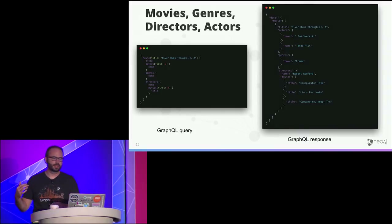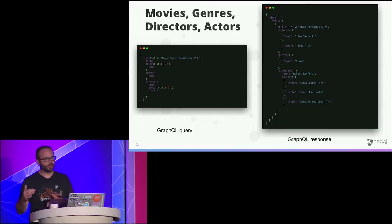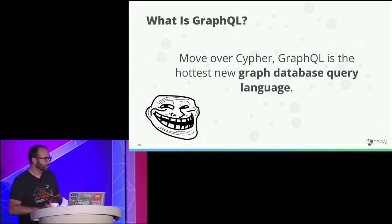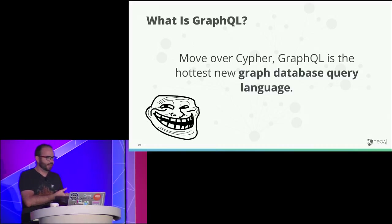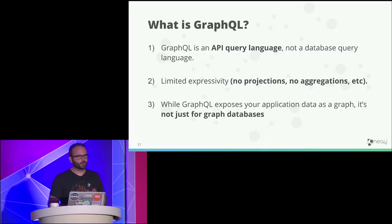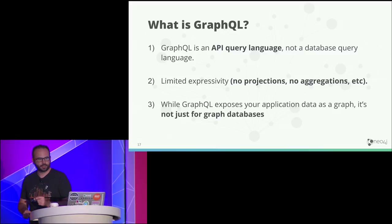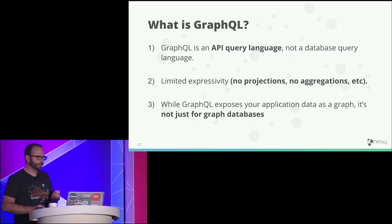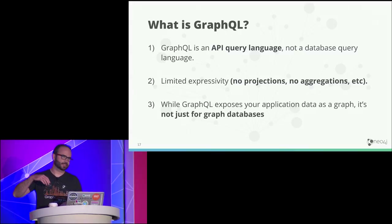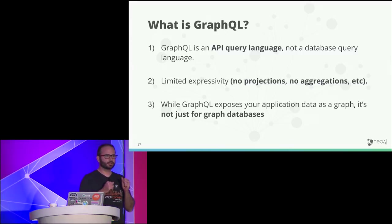When data comes back, the format matches our GraphQL query — we get back just the data we asked for. But does this mean GraphQL replaces Cypher as a graph database query language? No. GraphQL is an API query language, not a database query language. It has limited expressivity — we can't do projections, aggregations, or variable-length paths like in Cypher. It's really just a query language for querying an API.